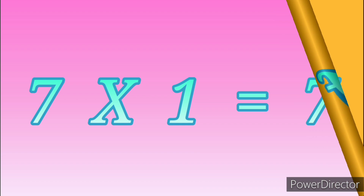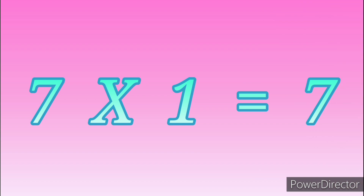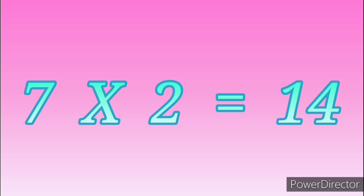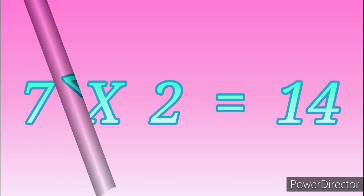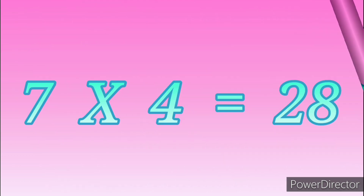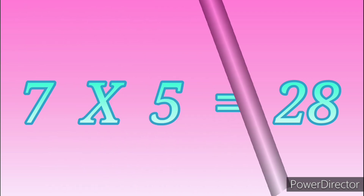Table of Seven. 7 ones are 7. 7 twos are 14. 7 threes are 21. 7 fours are 28.